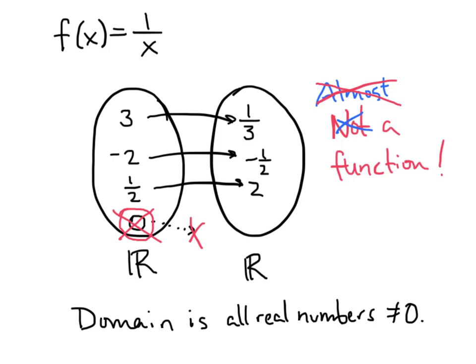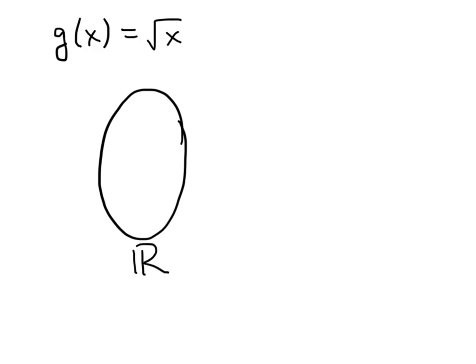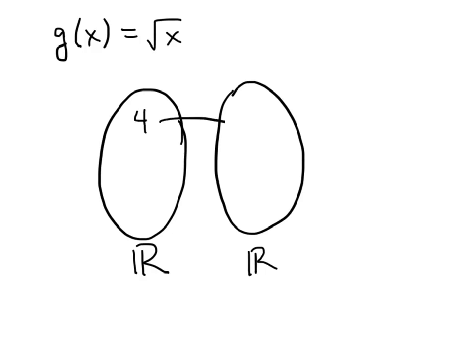Let's look at another example. If we have g(x) = √x, what would be numbers in the domain that would cause problems? Many numbers don't cause any issues: the square root of 4 is 2, the square root of 100 is 10, and the square root of 0 is 0.